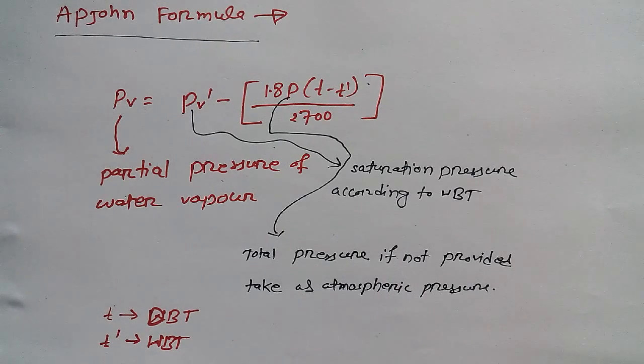Small t is for dry bulb temperature - DBT, and t dash is denoted for wet bulb temperature. So this is all about the Apjohn formula.